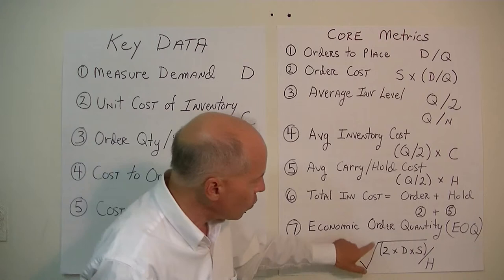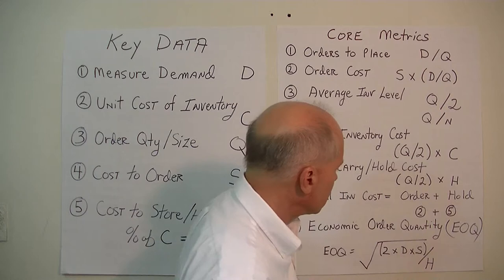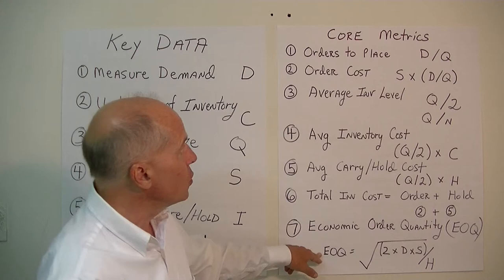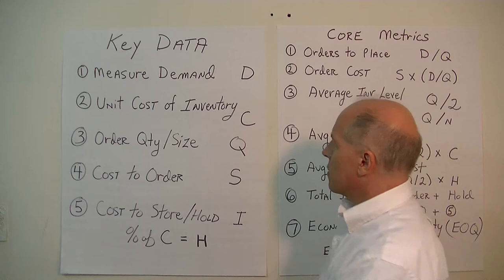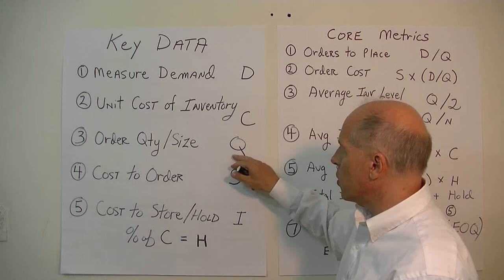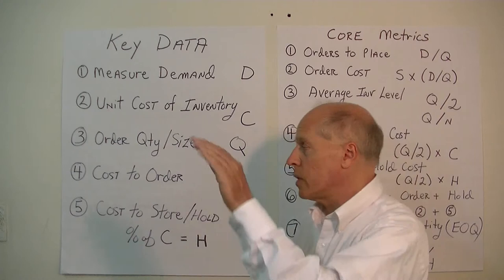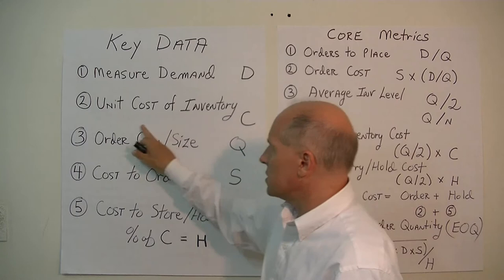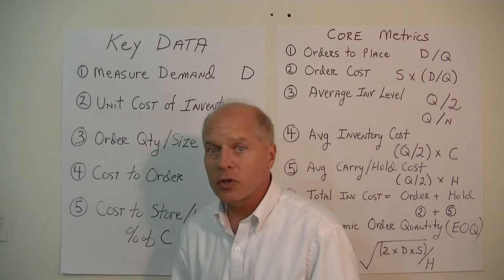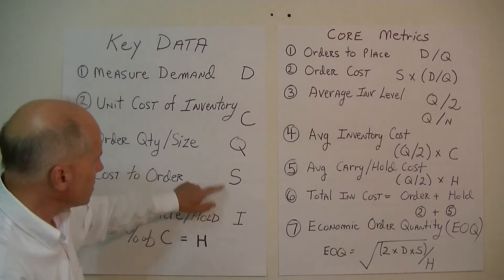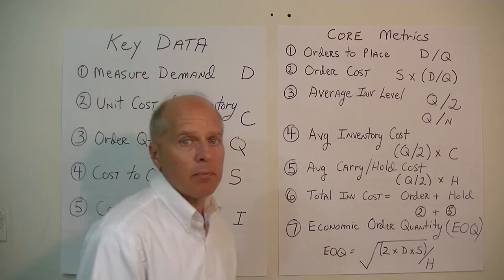The EOQ formula is the square root of 2 times D times S divided by H. In the next lesson we'll work through a numerical example. The main thing is to make sure you collect these data points in your control system. You don't have to use EOQ if you have seasonal inventory items — it's much more difficult then. But if you have uniform, consistent inventory levels throughout the year, you should try to apply the EOQ model, or at minimum collect these data points to minimize and control costs.